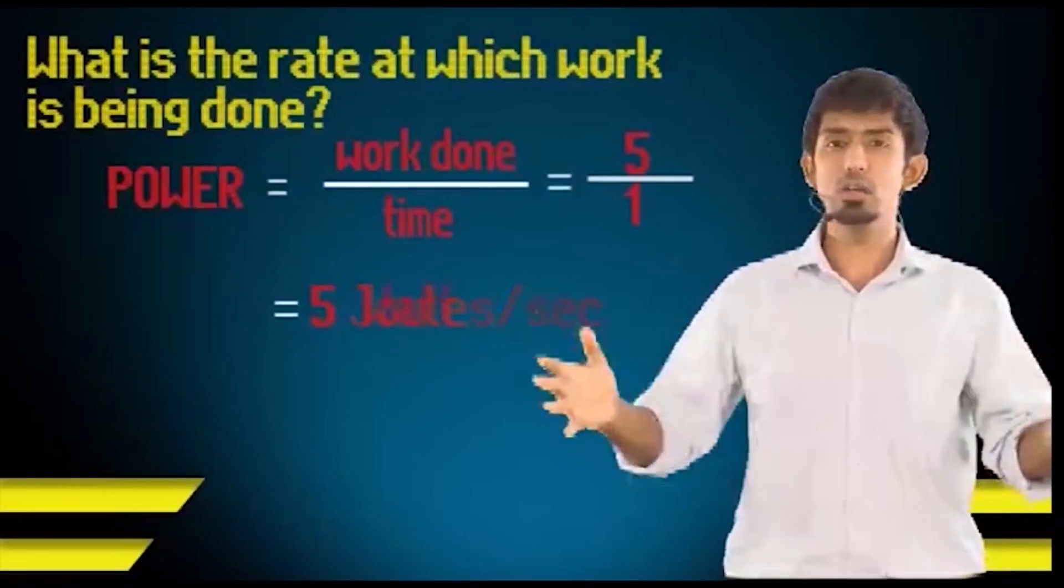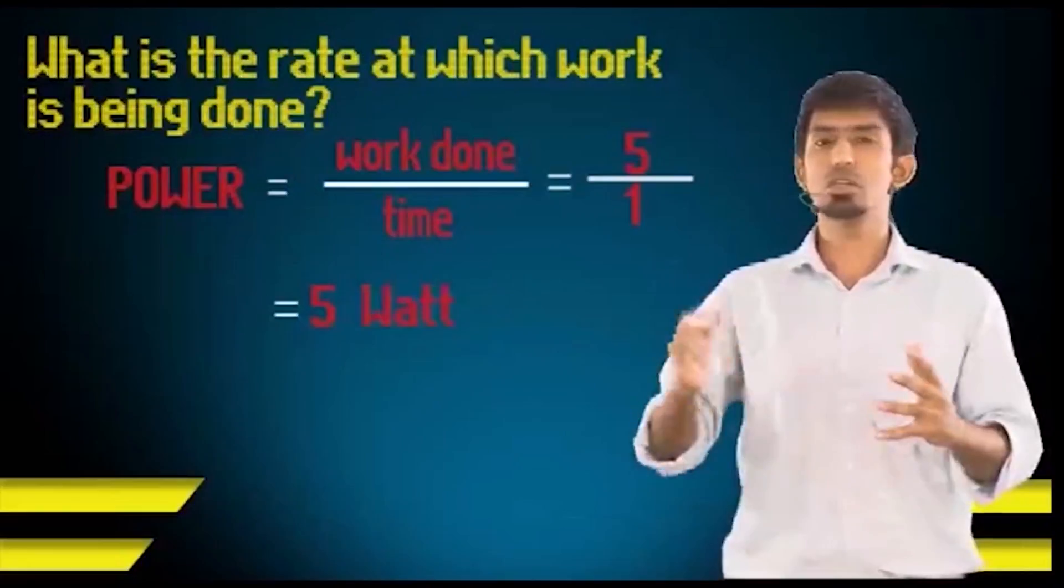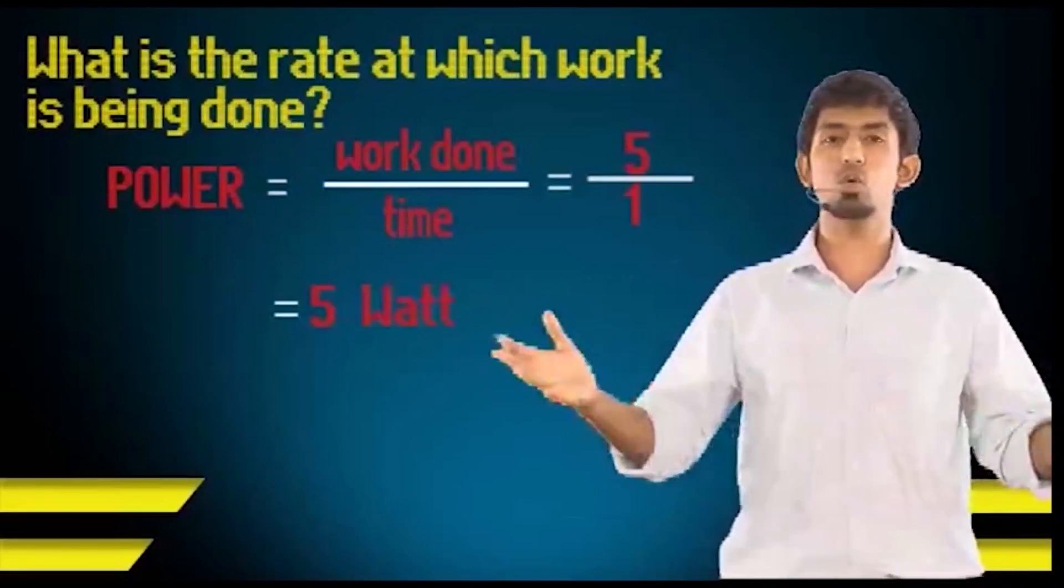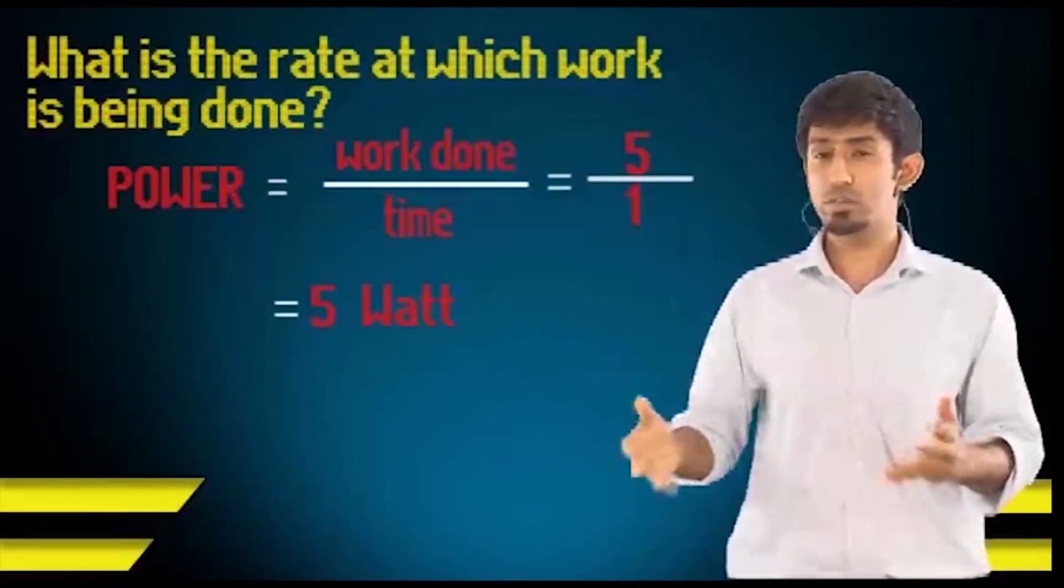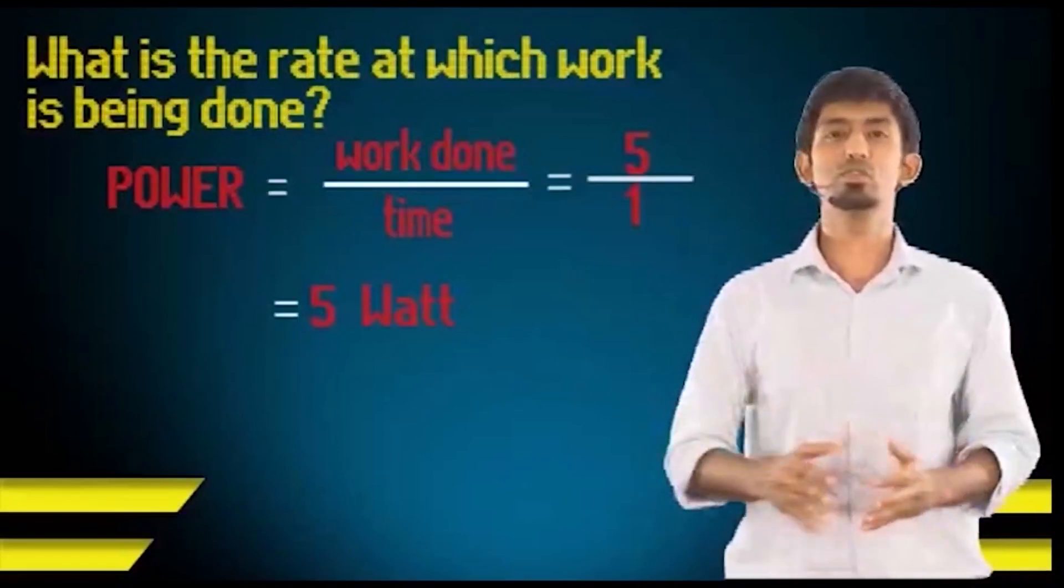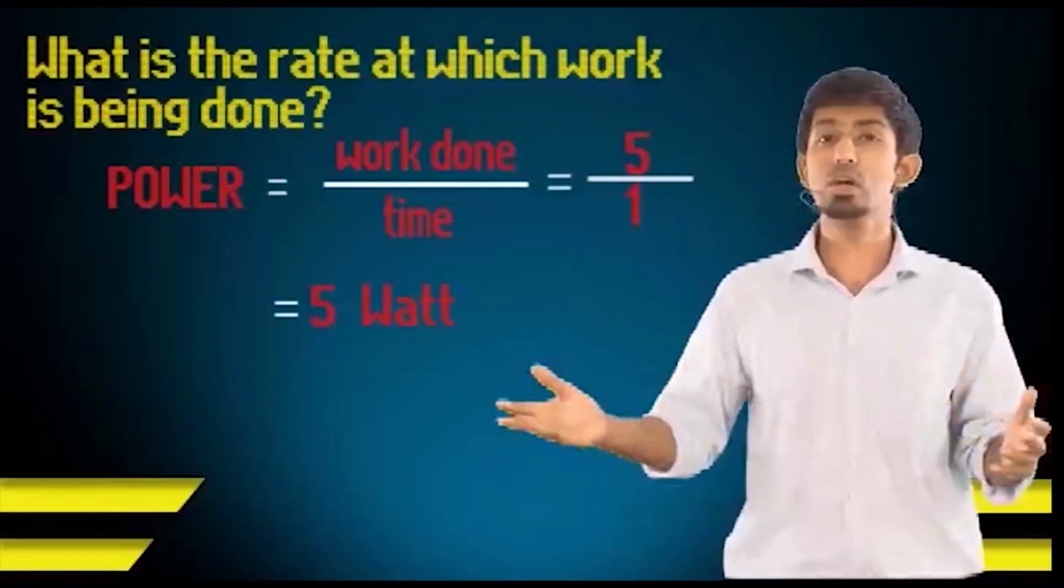And this unit is called watt, named after James Watt. So power is measured in watts. And if somebody has 5 watts of power, it means that for every unit of time, which is in this case second, 5 joules of work is being done.